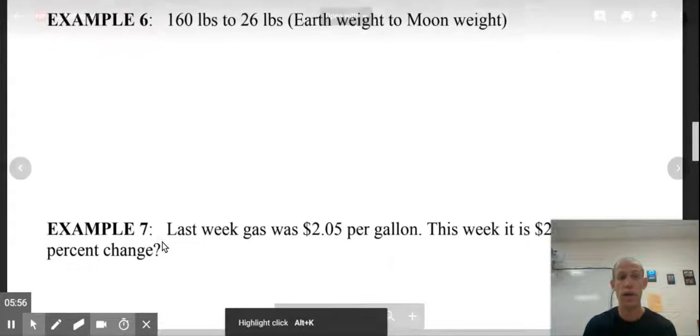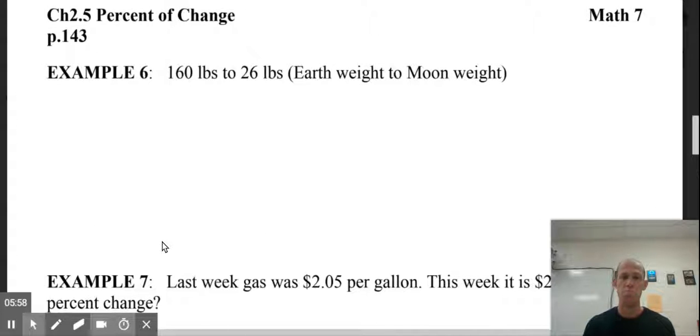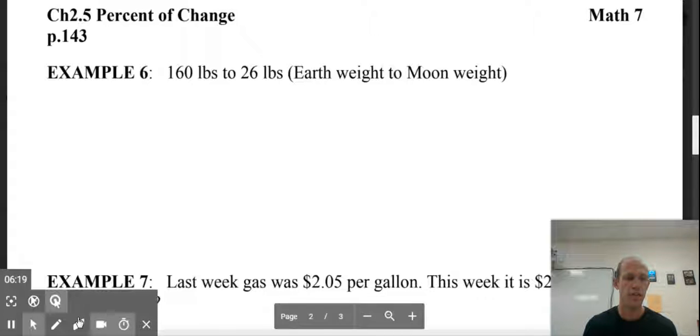We can talk about our weight. So weight is a force. It's determined by how much gravity an object possesses. The earth has more gravity than the moon because the earth is larger. Essentially it warps space time more. So if you weigh 160 pounds on earth, you will weigh 26 pounds on the moon. And let's see what your weight changed by as a percent.